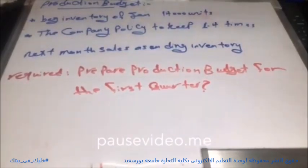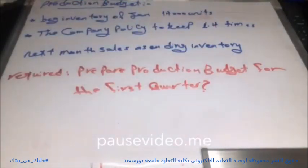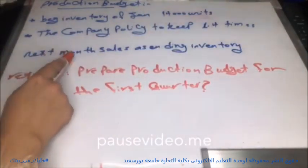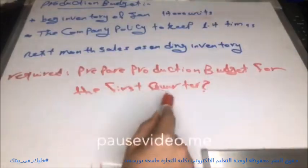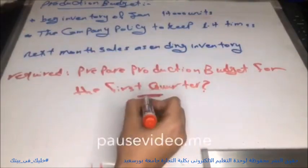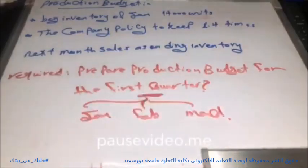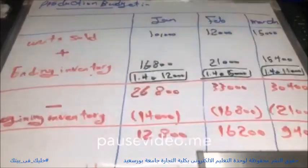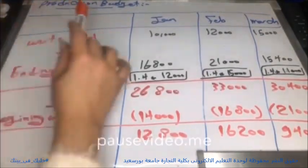Now we will know how the production budget is prepared. From the previous example, we will add beginning inventory of January: 14,000 units as given. The company policy is to keep 1.4 times next month's sales as ending inventory. Required: prepare production budget for the first quarter — January, February, and March. To prepare the production budget, we make a table with four columns and three rows.